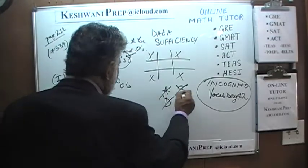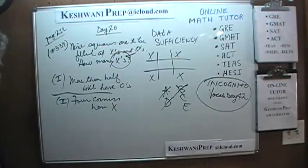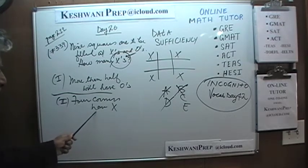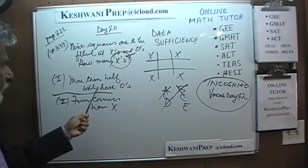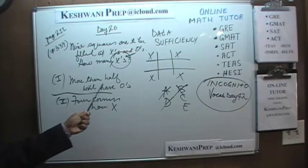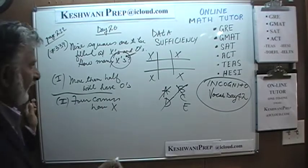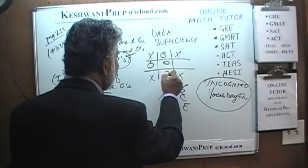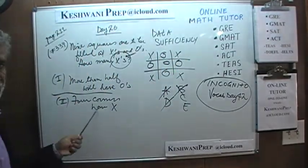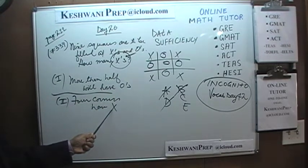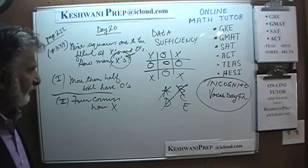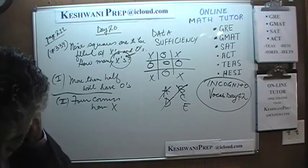The answer cannot be B either. But when we put the two statements together, now we can answer the question. We know the corners must have X's and we also know that more than half must be zeros. Since there are only 9 squares, more than half means at least 5. We satisfy both conditions — more than half are zeros and all corners have X's. There are only 4 X's. The answer is C.